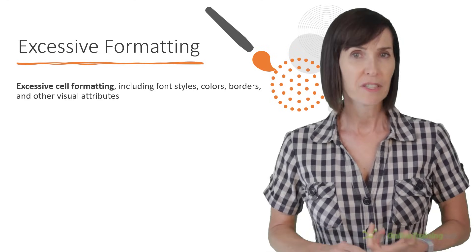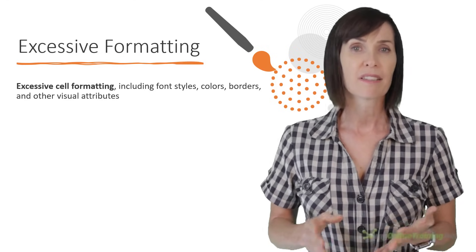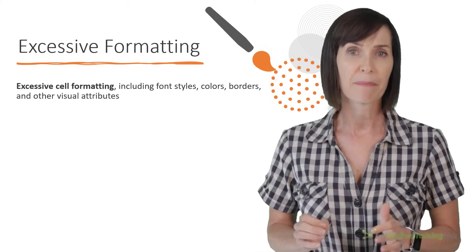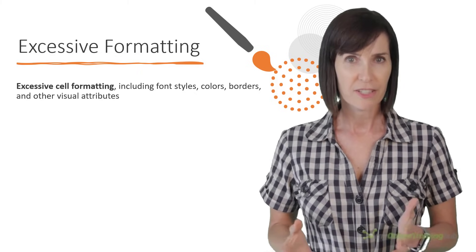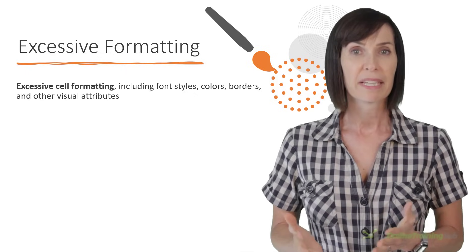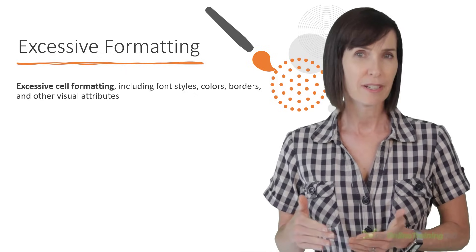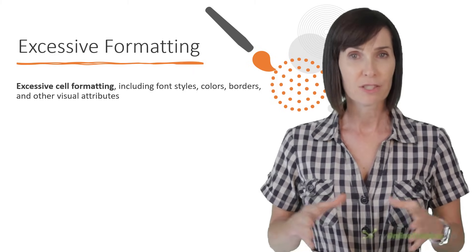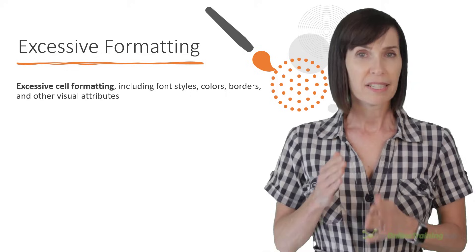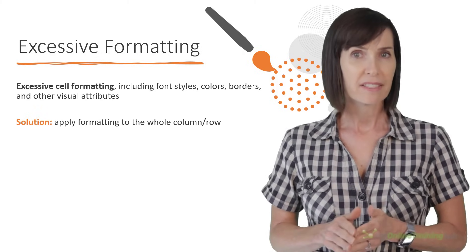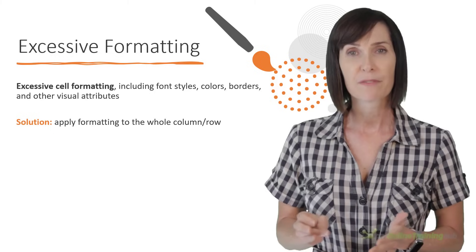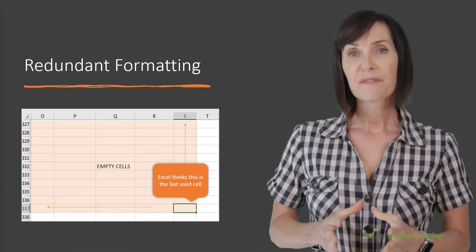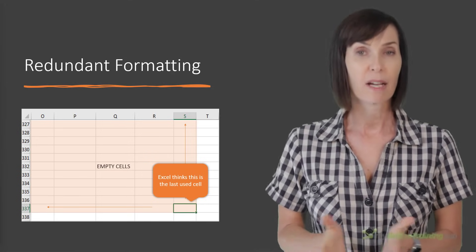Excessive cell formatting, including font styles, colors, borders and other visual attributes that are applied to cells can consume a significant amount of processing power and memory, especially when applied to large datasets. Excessive formatting can also make the file size larger, and that's going to slow down the loading and saving times for the workbook. Instead of applying formatting like cell fill color to a large range of cells, apply it to the whole column or row. It's easier for Excel to know that a whole row or column is formatted in a particular way than it is to keep track of thousands of separate cells.